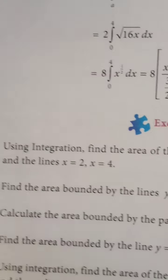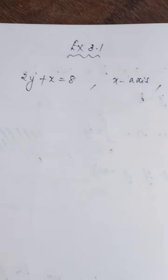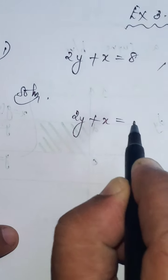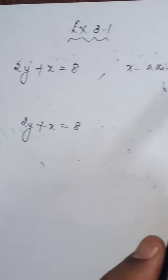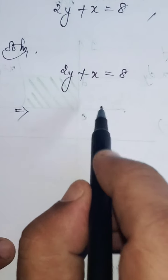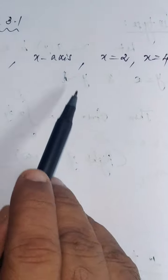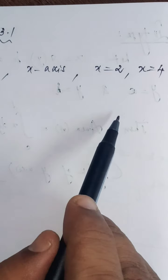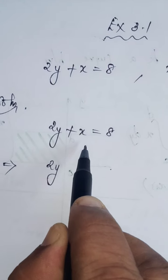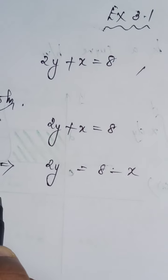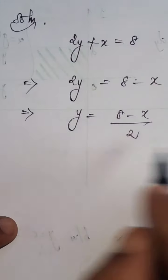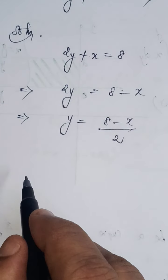Solution: take 2y plus x equals 8. Since x limits are given, find y from this equation, because for the x-axis you have to apply the formula — integral a to b of y dx or minus y dx — so we need y. Retaining 2y on the left, 8 minus x comes to the right, so y equals (8 minus x) divided by 2. Let this be equation one.